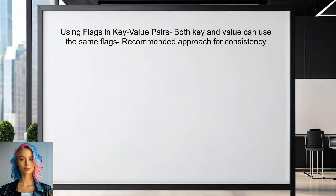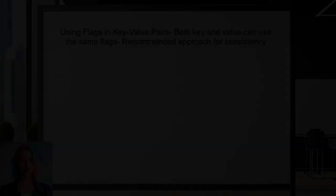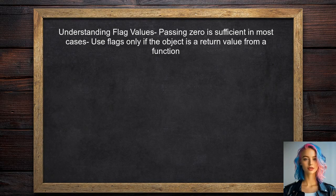In the context of a key-value pair written to a parcel, both the key and the value can use the same flags — this is often the recommended approach. For most cases, passing zero is sufficient unless the object being written is a return value from a function.